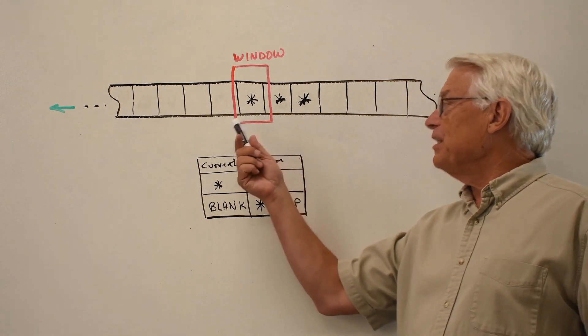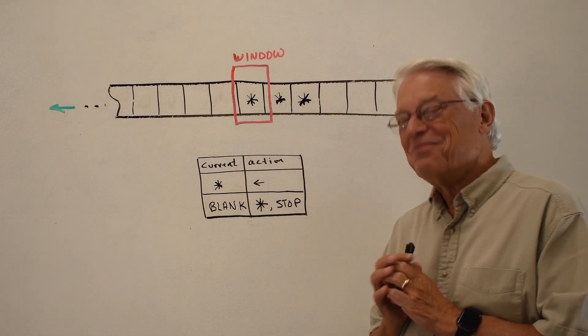For example, let's say that this is the initial state of our machine.